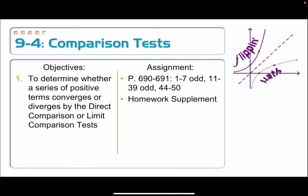We've been talking about series. A series is a sequence of numbers that you're adding all the way to infinity, and we want to know: does that series converge to a number, or does it diverge — get infinitely big, oscillate, or something like that? We've developed a number of tests: the nth term test for divergence, the geometric series test, the p-series test, and the integral test, which applies when terms can be replaced by a function that is continuous, positive, and decreasing.